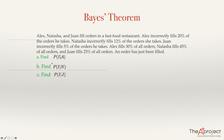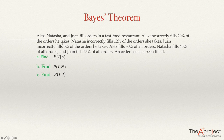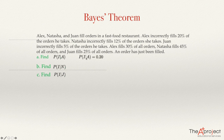For example, this question — the probability that the order is incorrect given that it was filled by Alex — is given because they tell me that Alex incorrectly fills 20% of the orders he takes. That means if Alex takes an order, there is a 20% probability that this order is incorrect. So given that Alex takes the orders, there is a 20% probability that it will be filled incorrectly. So the probability of I given A equals 0.20.